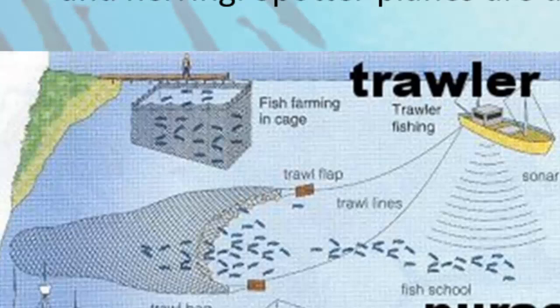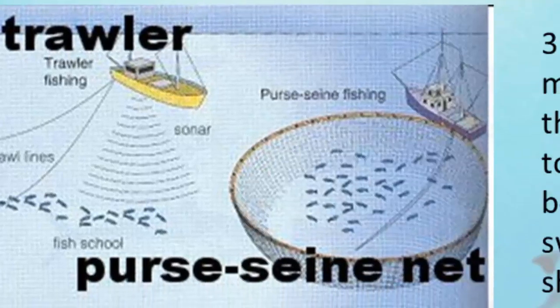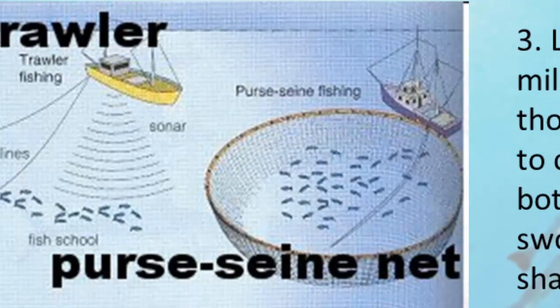Our next type of fishing technology is purse seine nets. These are used to catch surface dwellers like tuna, mackerel, anchovies, and herring. Oftentimes, these fishing fleets will actually use spotter planes to find out where the schools of fish are so they can appropriately place their nets. Unfortunately, with older purse seine nets, a lot of times you were catching things like dolphins as bycatch.